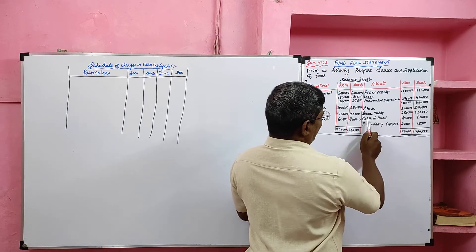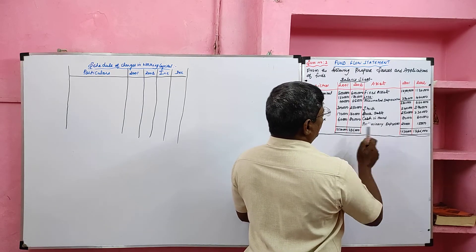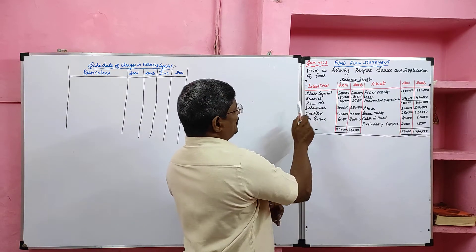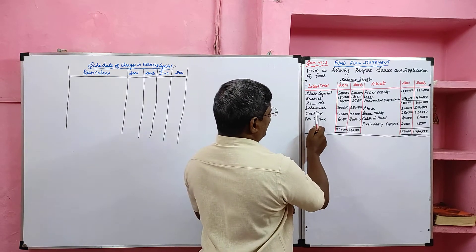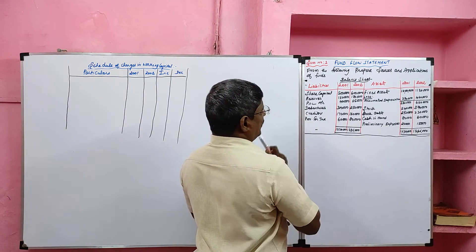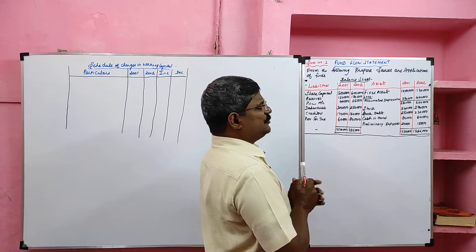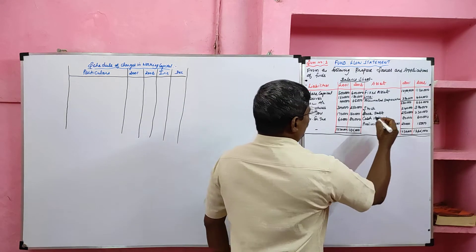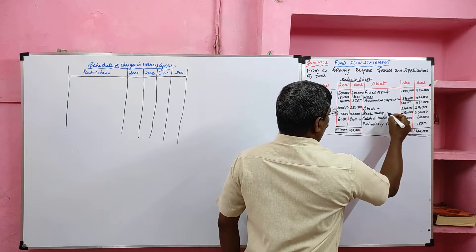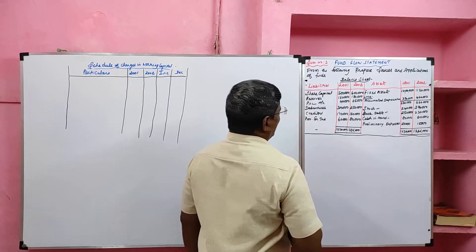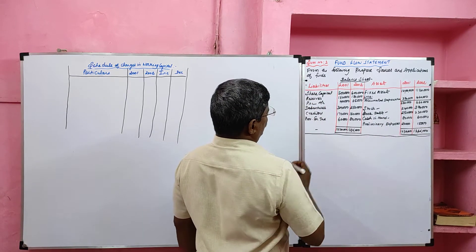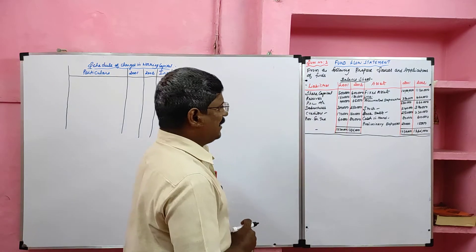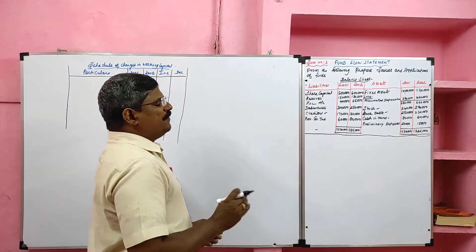Stock, book debts (meaning debtors), cash, and preliminary expenses are on the asset side. On the liability side: share capital, reserves, profit and loss account, debentures, creditors, and provision for taxation. First we should pick current assets - stock, book debts, and cash. Current liabilities are creditors. Provision for tax is not given under current liabilities, so we should treat it as long term.